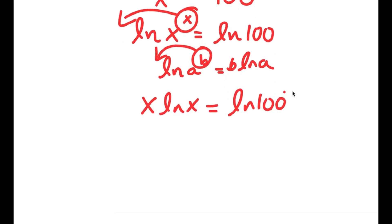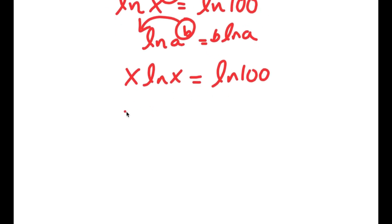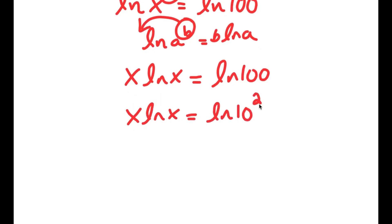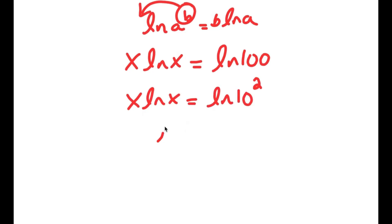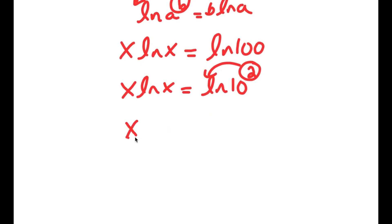Now ln 100 is the same as ln of 10 squared. Applying the log power rule again, I can move the 2 to the front, so I get x times ln x equals 2 times ln 10.